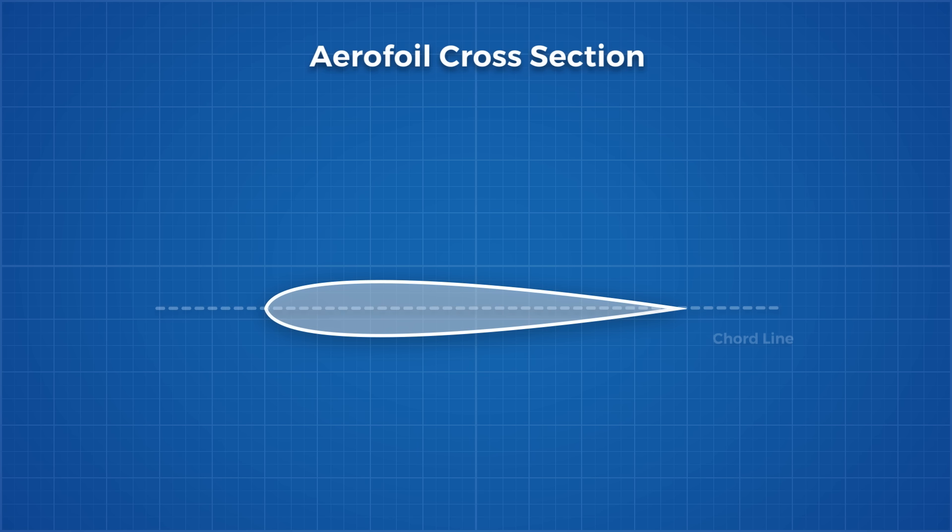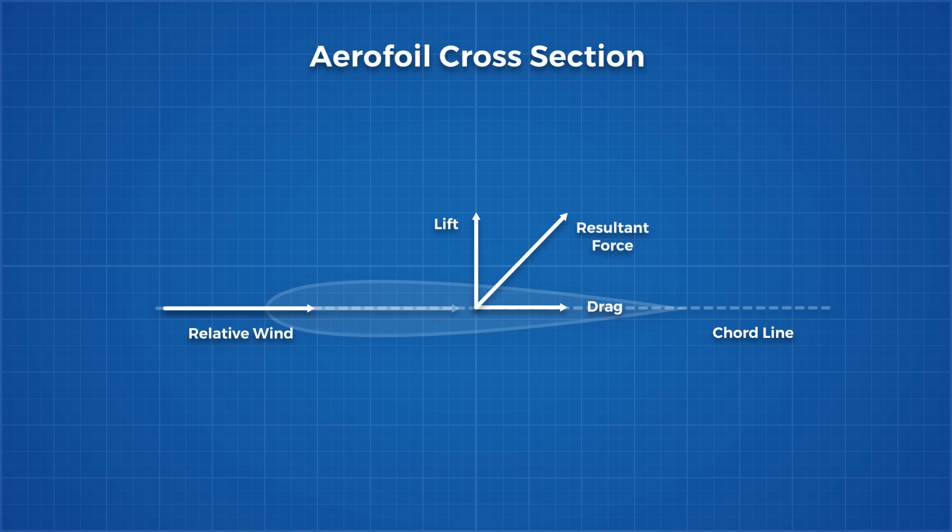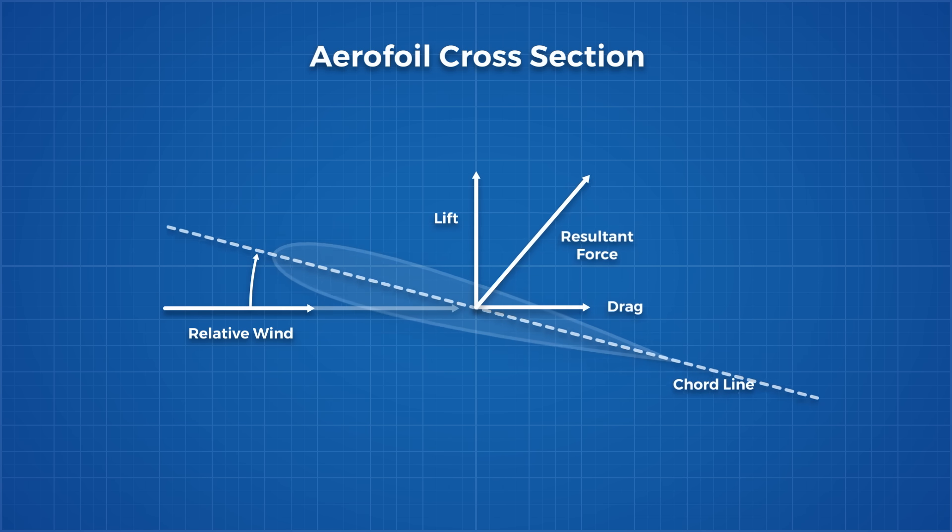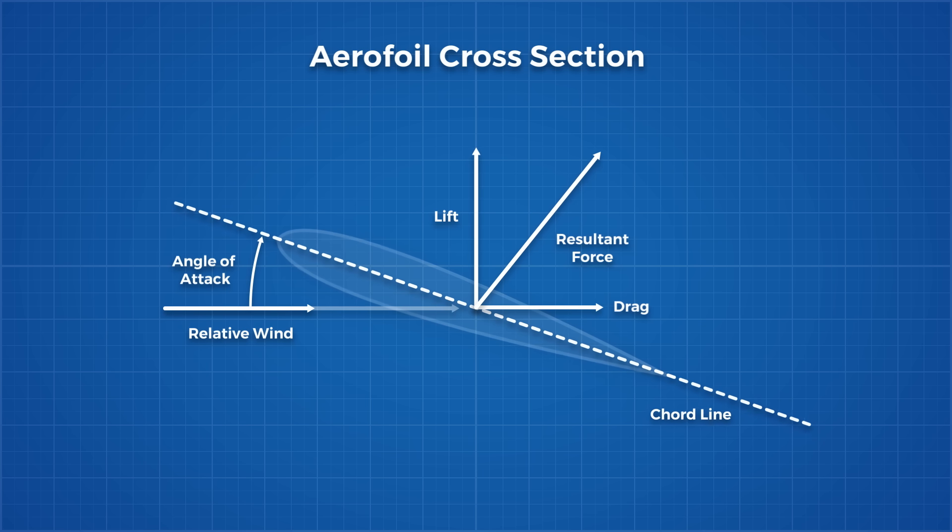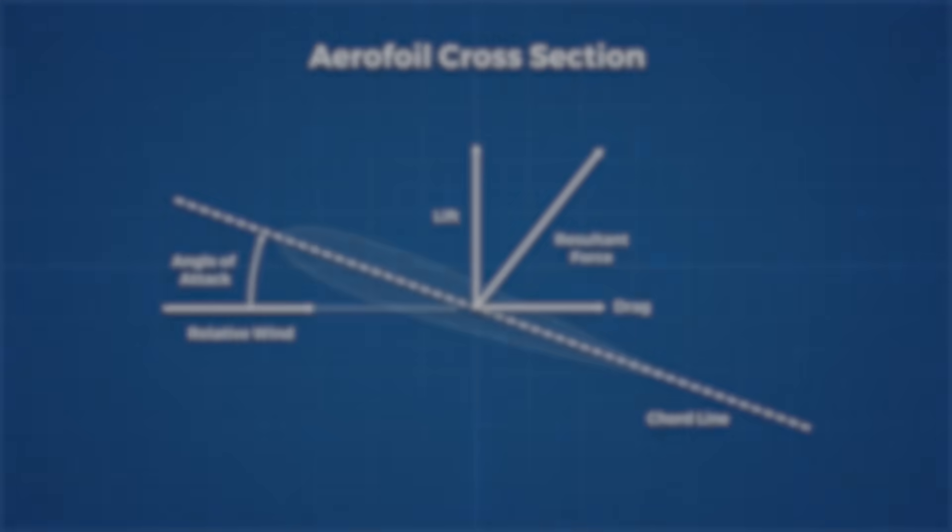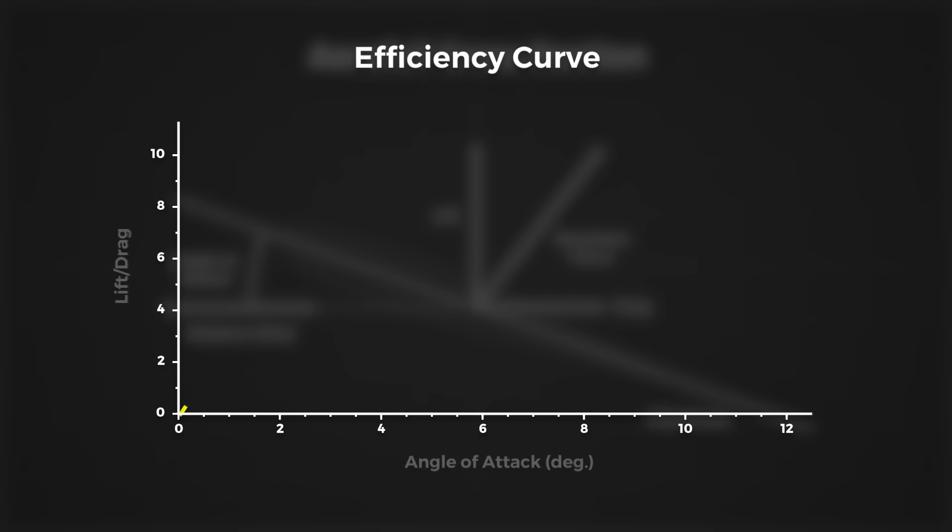To understand this, let's look at a normal aerofoil cross section. When it travels forward, it will provide lift perpendicular to the cord line. If the aerofoil increases its angle of attack, which is the angle between the direction of movement and the cord line, the lift and drag of the aerofoil will change in magnitude. We can map this with the lift to drag ratio, which is essentially our efficiency curve for an aerofoil. We can see that the wing generates the most lift for the least drag penalty at an angle of attack of 2 to 4 degrees.